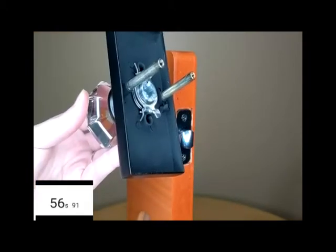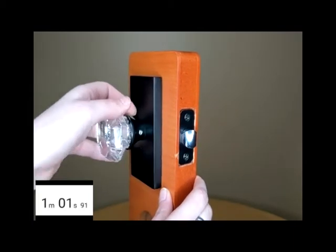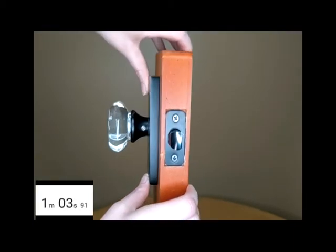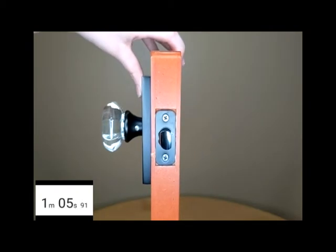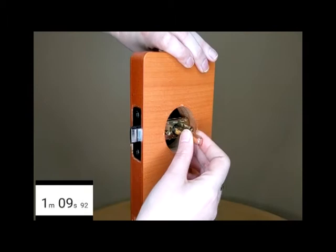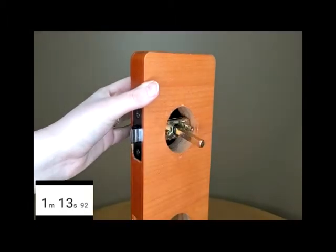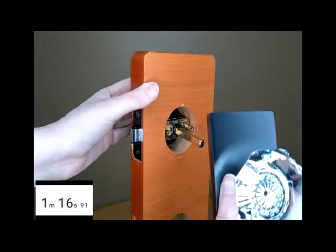Next, you'll insert this half of the doorknob set through the latch in your door. Then you'll insert the spindle through the latch into the doorknob. And finally, you'll insert the spindle into the other half of the doorknob set.